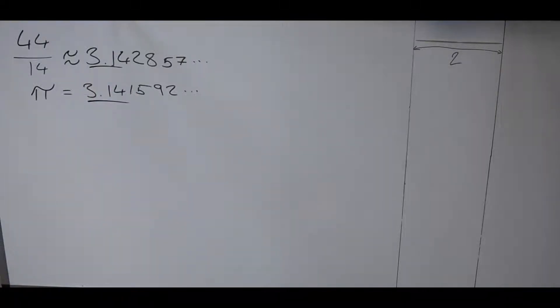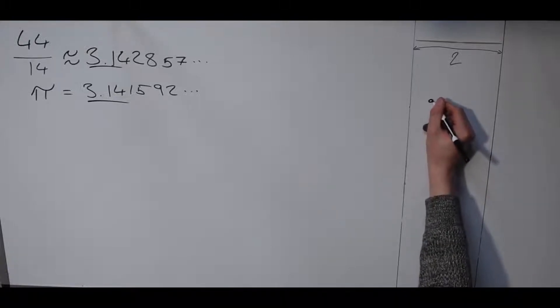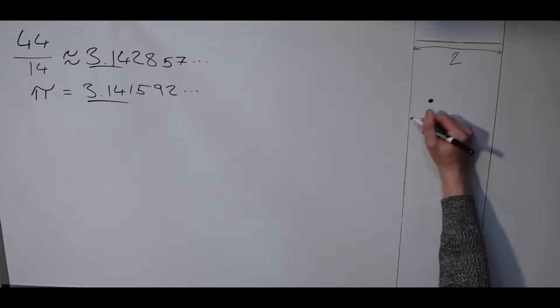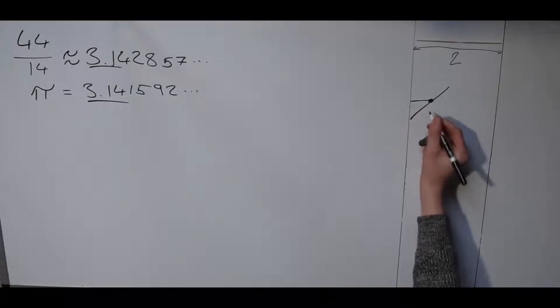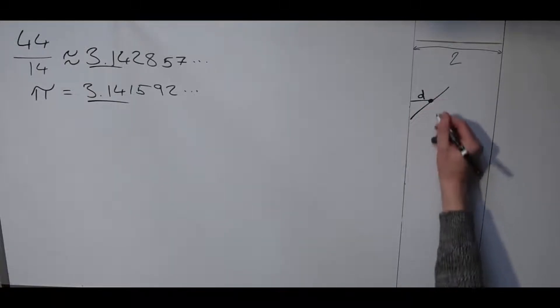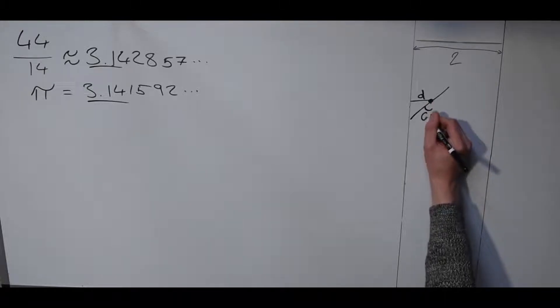But why does this work? We need to consider two things: the distance of the centre of the match from the line d, and the angle the match makes with the lines theta.